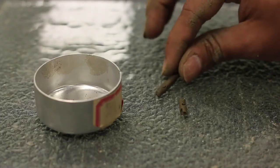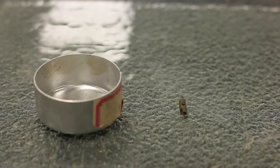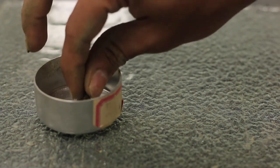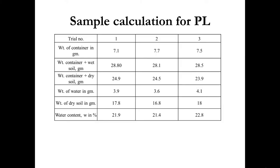Collect the crumpled sample and determine the water content. Determine the water content of the crumpled soil sample for three trials. Plastic limit will be the average of the three trials.